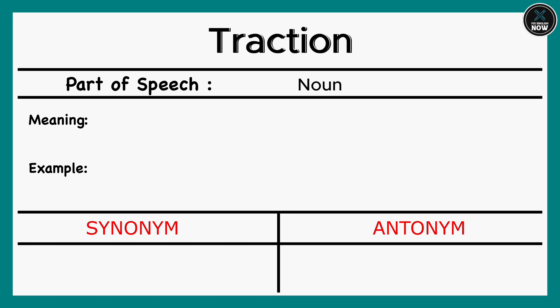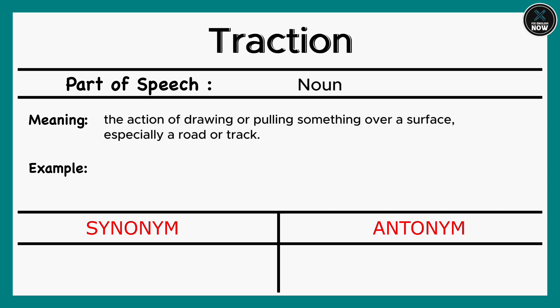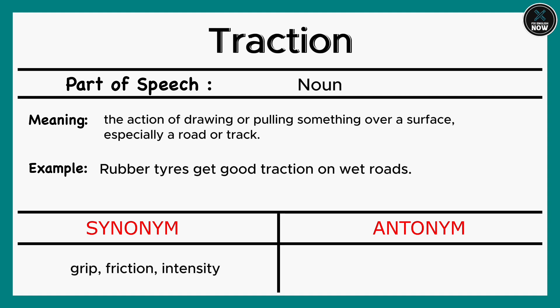Traction: The action of drawing or pulling something over a surface, especially a road or track. Example: Rubber tires get good traction on wet roads. Synonyms: Grip, Friction, Intensity. Antonyms: Repulsion, Slickness.